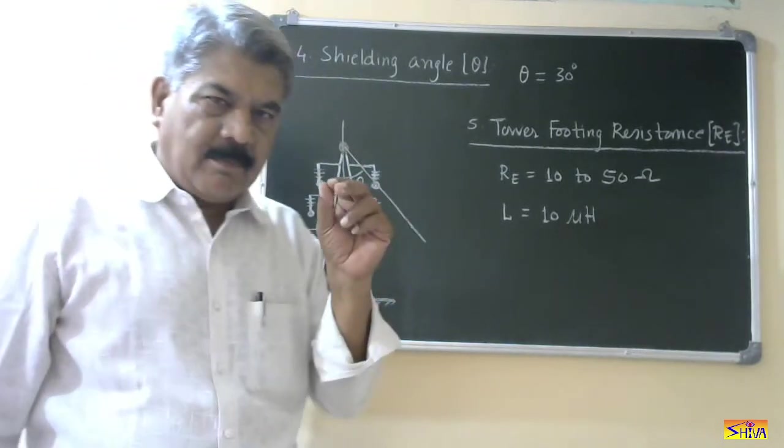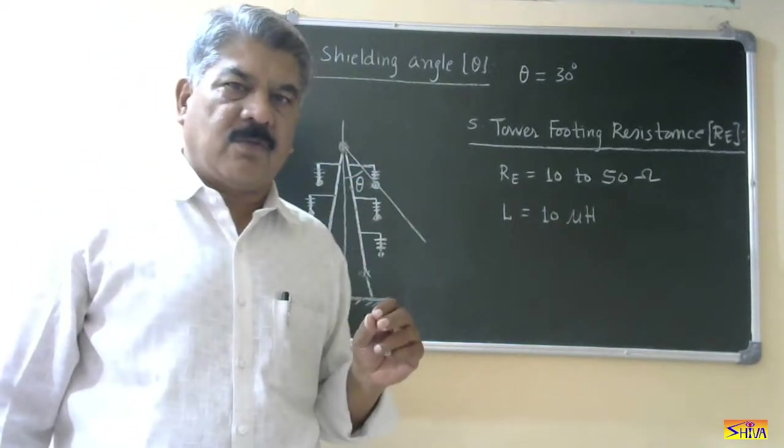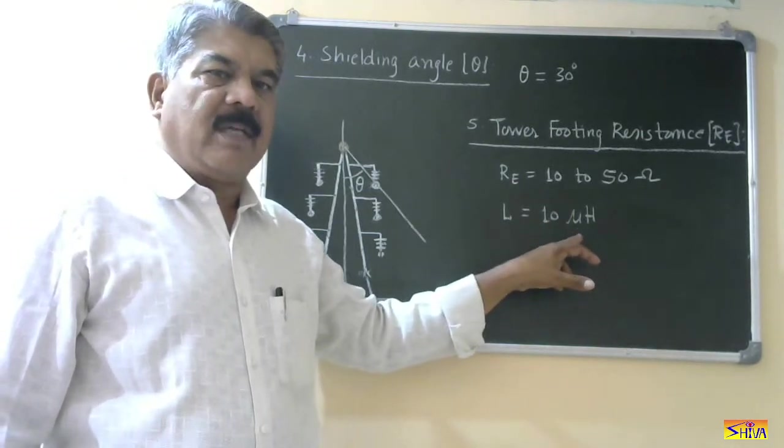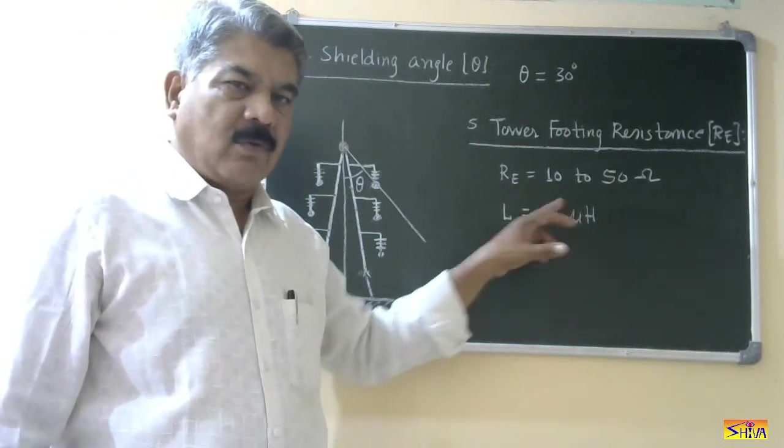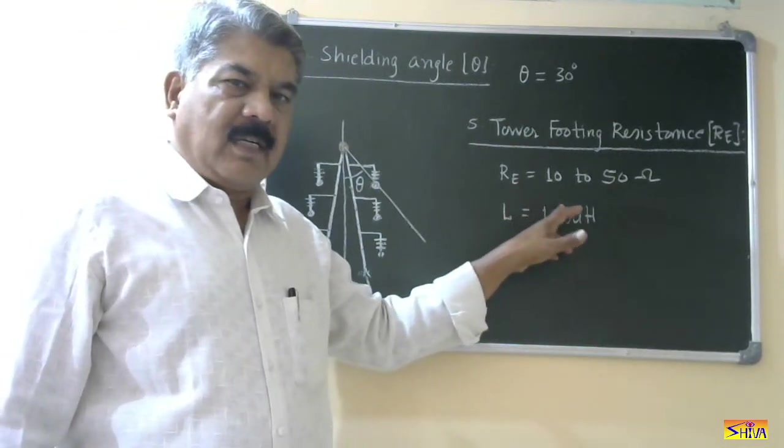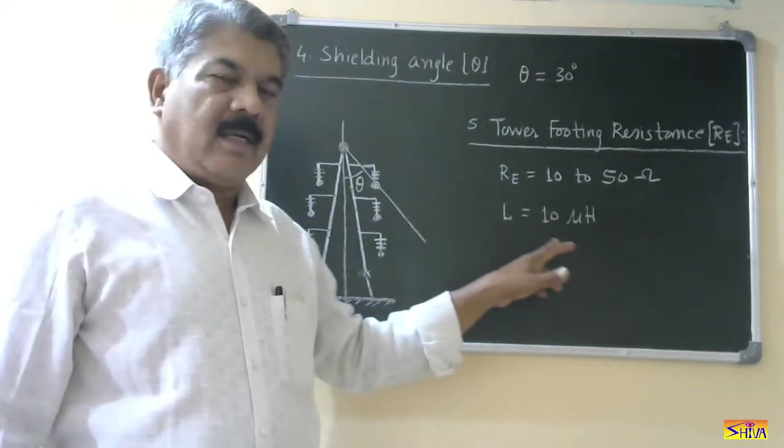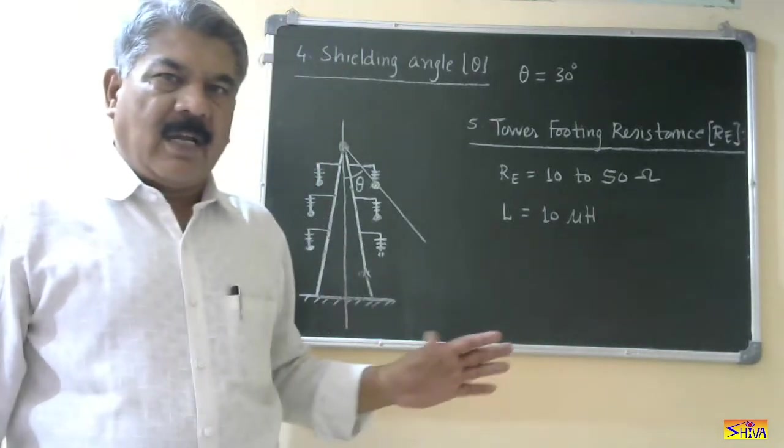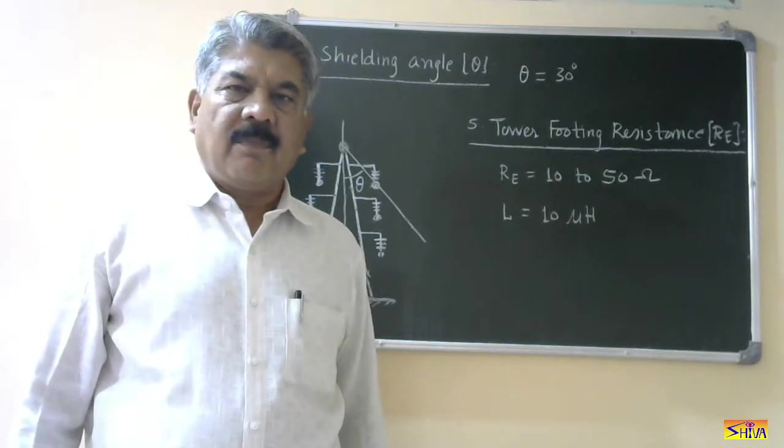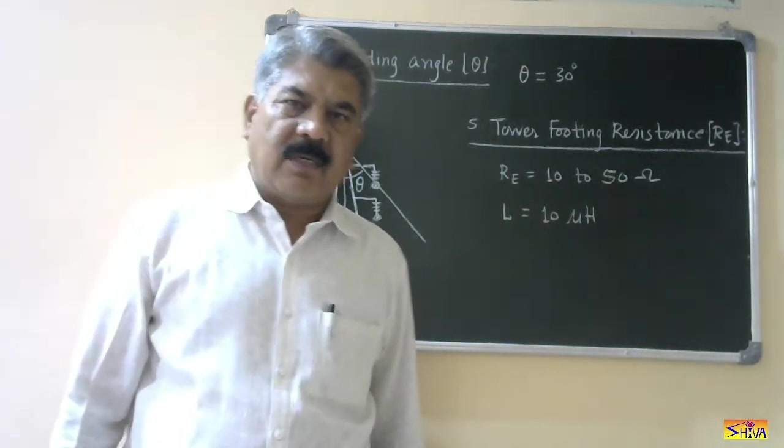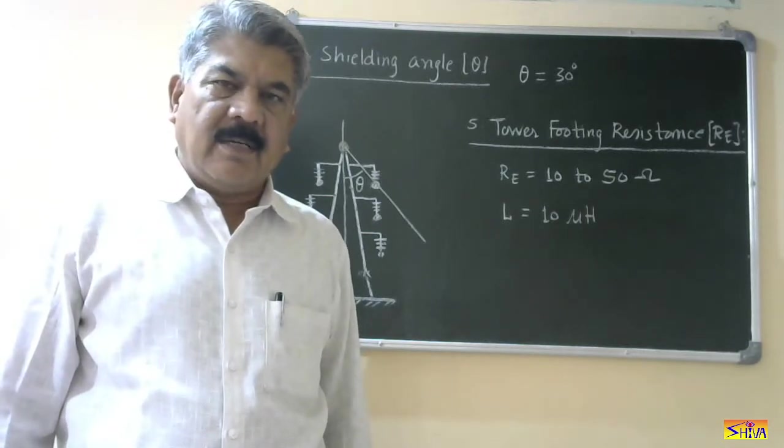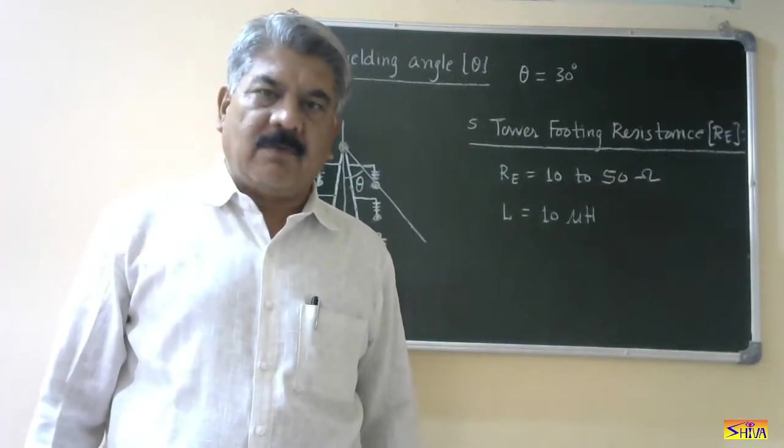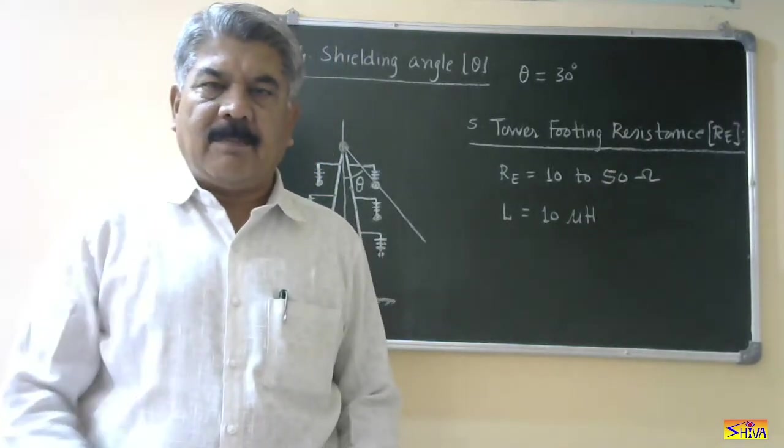Now as it is metallic structure some small inductance will also come. And that inductance we consider while calculation. And we take this value is 10 microhenries. So tower footing resistance we normally take between 10 to 50 ohms. And inductance we take 10 microhenries. So today I have discussed three factors or three definitions. One is backflashover. Second is shielding angle. And third is tower footing resistance. One more definition is there. One more parameter is there. That I will explain in my next class.